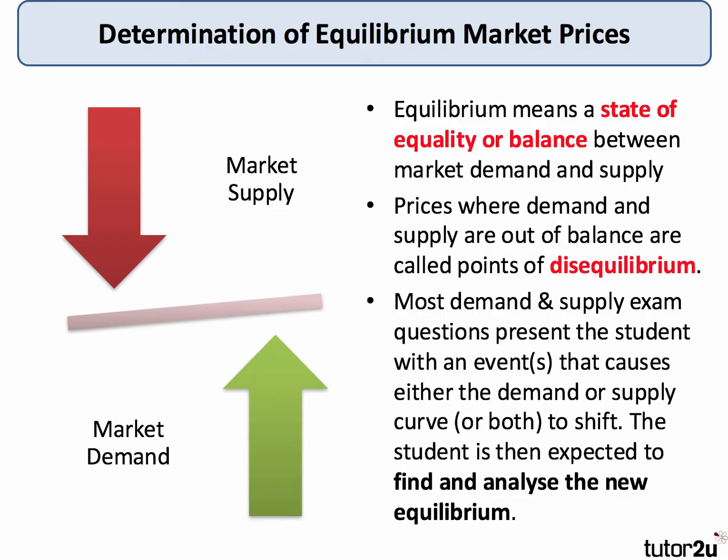Prices where demand and supply are not the same are called points of disequilibrium. The key point is that the free market equilibrium price is a market clearing price, determined by the interaction of demand and supply curves.